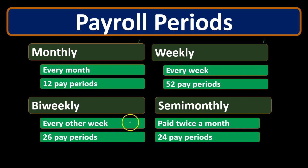So when we pay biweekly — every other week — because there are different amounts of days in each month, we could have some months that have three pay periods. That would line up to having two more pay periods within the year. Whereas semi-monthly gives us a notably smaller number of pay periods.